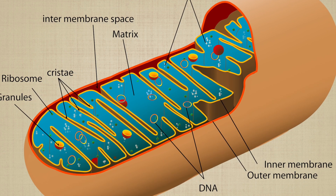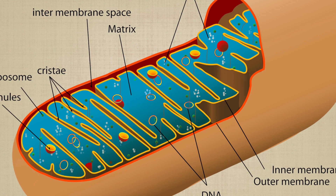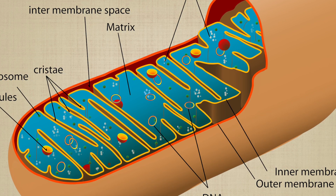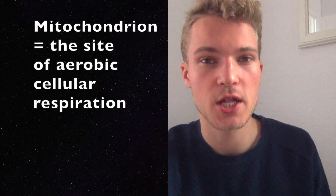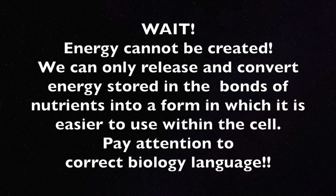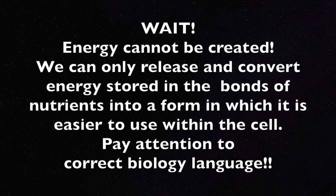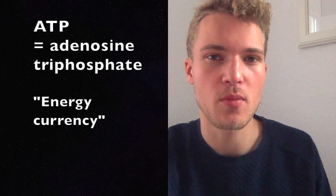The mitochondrion has a folded inner membrane, which gives more surface area — important for the chemical processes occurring there. It is the site of aerobic cellular respiration, which is the process by which we take organic molecules and create energy. We store that energy in the form of ATP — adenosine triphosphate — a high-energy molecule that's central to energy transfer within the cell.